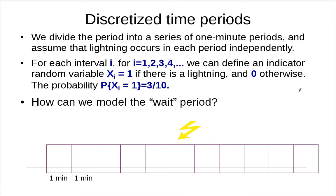Let's get back to our discussion on exponential random variables. Previously, when we introduced the Poisson random variable, we divided a period into a series of one-minute periods, and we wanted to count the number of lightnings that occur — specifically the sum of the number of lightnings occurring in these 10 periods.